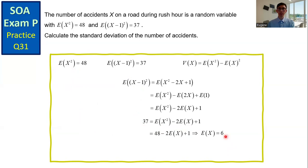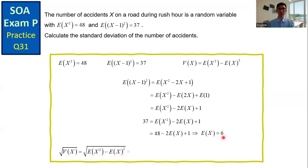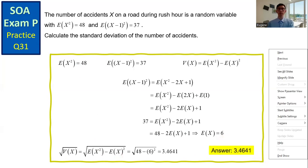To get the standard deviation, we take the square root of the variance, which is the square root of the expected value of X squared minus the square of the expected value of X. With E[X²]=48 and E[X]=6, we get the answer. The standard deviation is 3.4641.